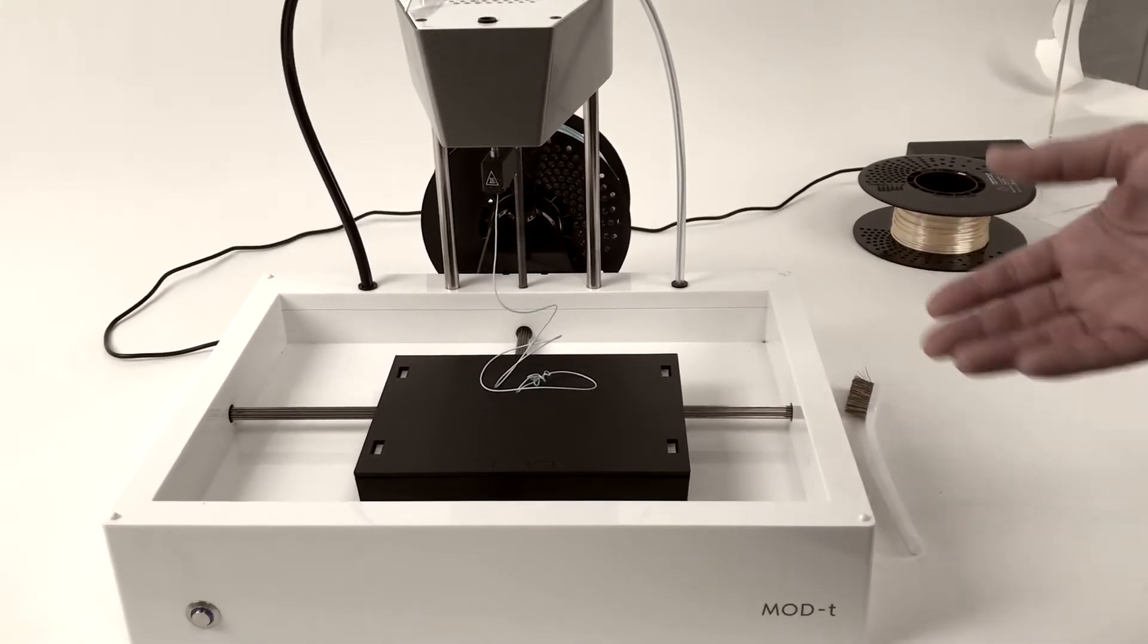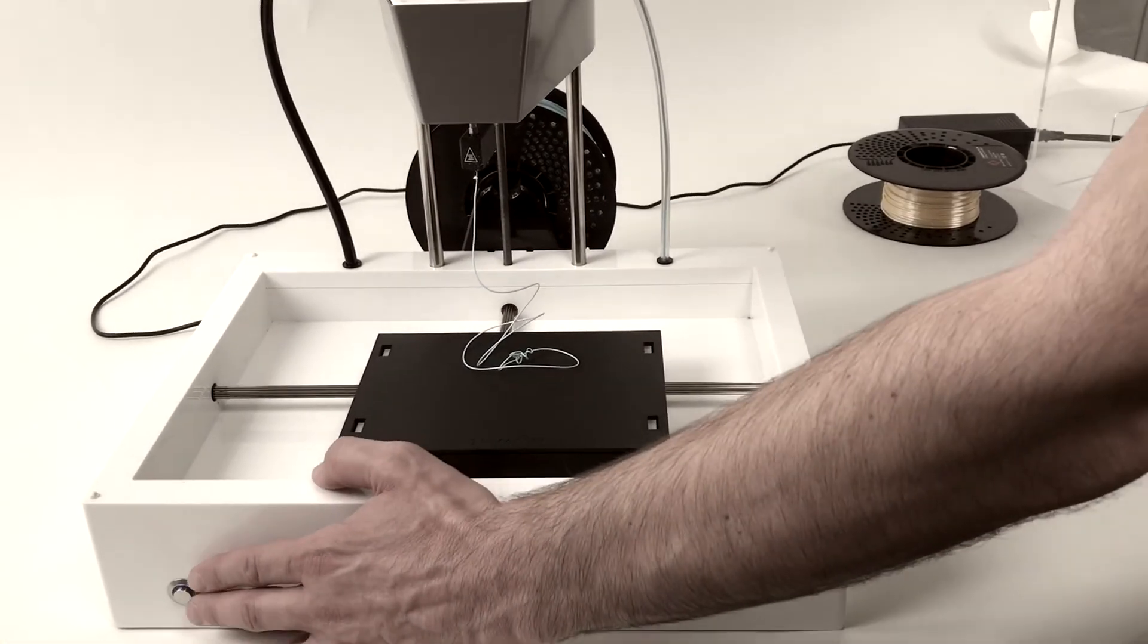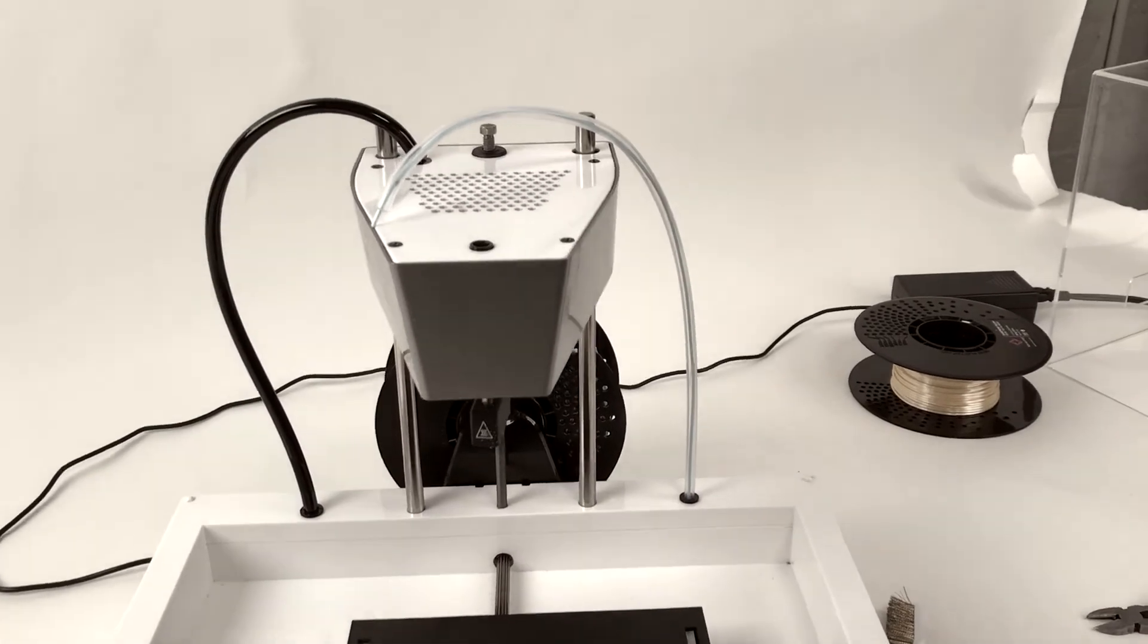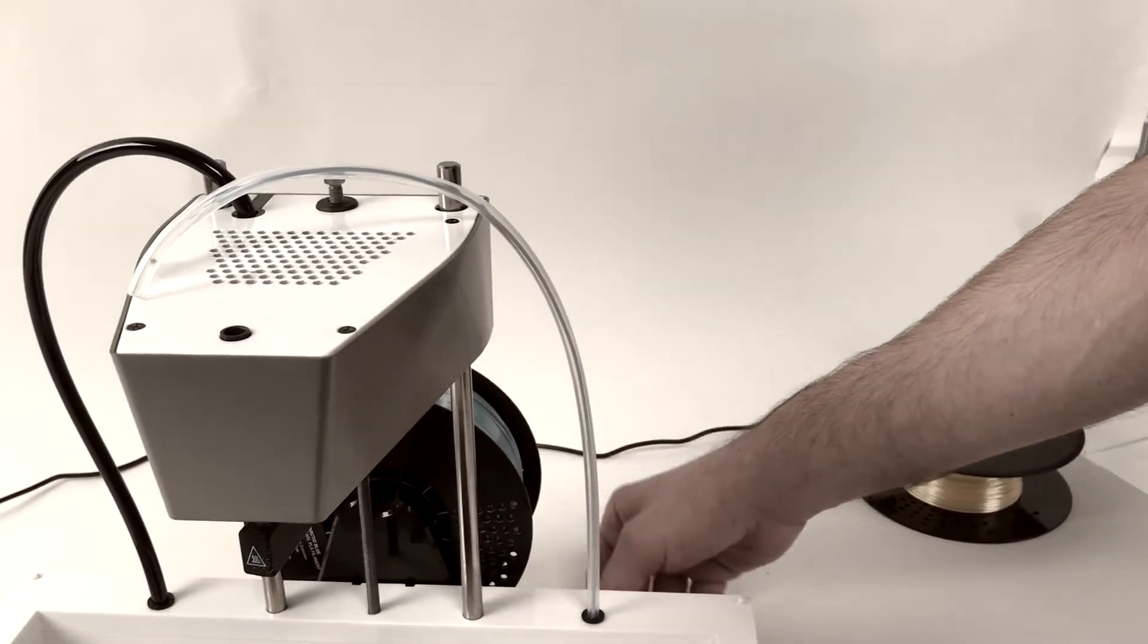Once the filament stops moving, we press the front panel button on the MOD-T to stop the load process, remove the excess filament, and unwind the filament.